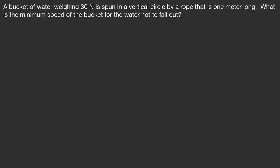The first problem: a bucket of water weighing 30 Newtons is spun in a vertical circle by a rope that is 1 meter long, and we want to find the minimum speed of the bucket for the water to not fall out. Begin by drawing a picture. The water will fall out at the top, and at the top we only have a single force acting downward, which is the weight.